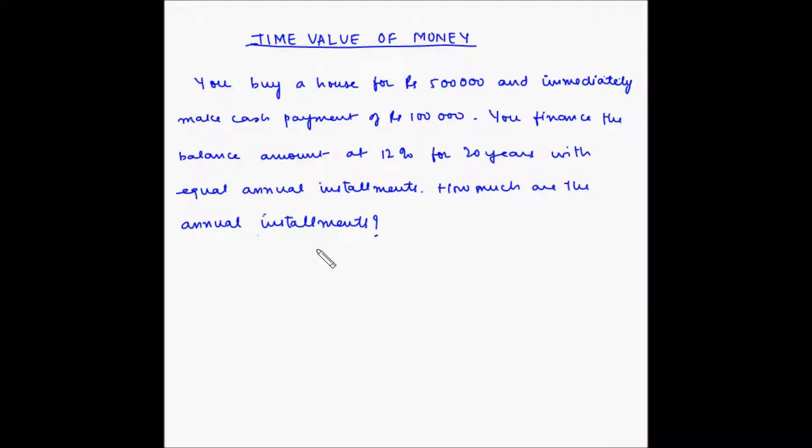Let us look at an example of time value of money. You buy a house for ₹5 lakh and immediately make cash payment of ₹1 lakh. You finance the balance amount at 12% for 20 years with equal annual installments.